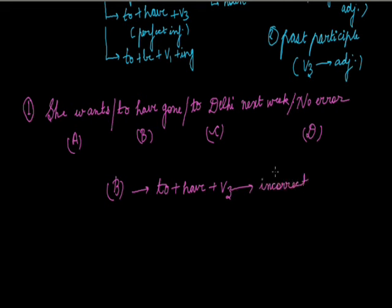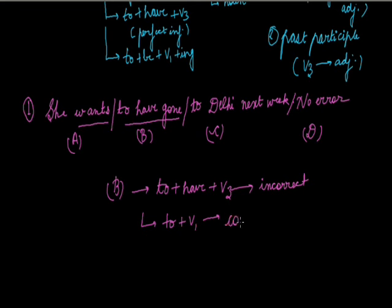The rule is: if the finite action precedes the non-finite action, and the non-finite action is used for some purpose, you will always use 'to + V1' instead of 'to have + V3'. So this part must have 'to go' instead of 'to have gone'.